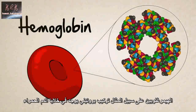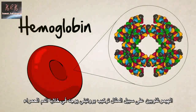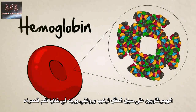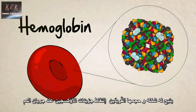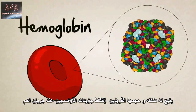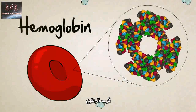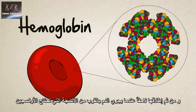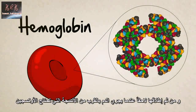Hemoglobin, for example, is a protein structure found in red blood cells. Its unique shape and size allow it to capture oxygen molecules when blood flows near the lungs, and then release them later when blood flows near oxygen-starved tissues.